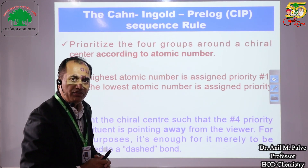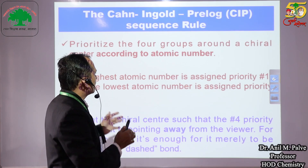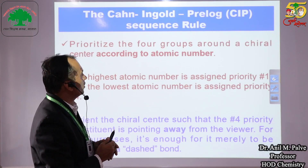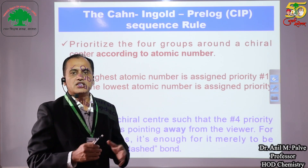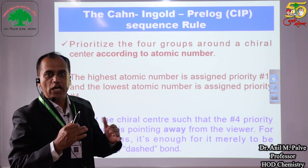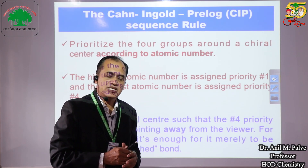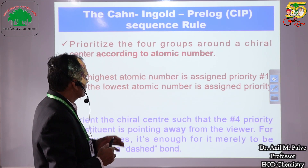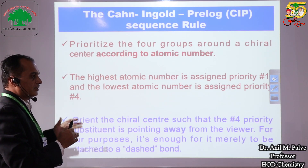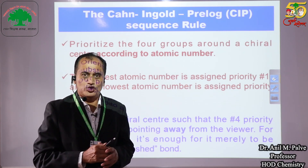Now while giving the R as well as S configuration, we have a certain rule — that is the Kahn-Ingold-Prelog rule — for sequencing the different groups. Because without giving priority to groups, we cannot assign R or S configuration. So first of all, let us learn the Kahn-Ingold-Prelog CIP sequence rule.